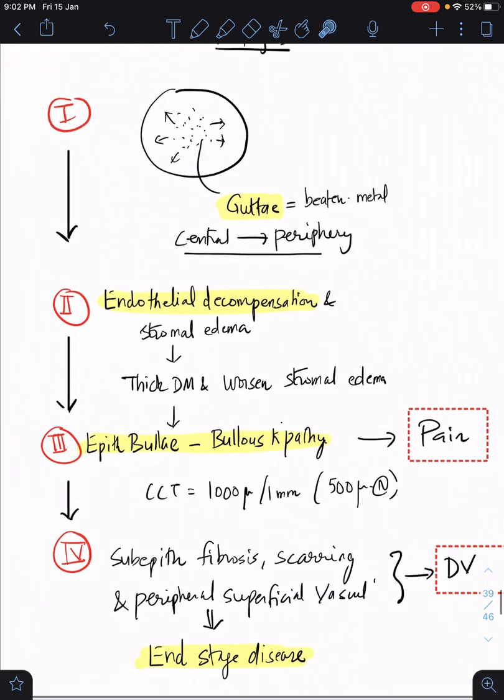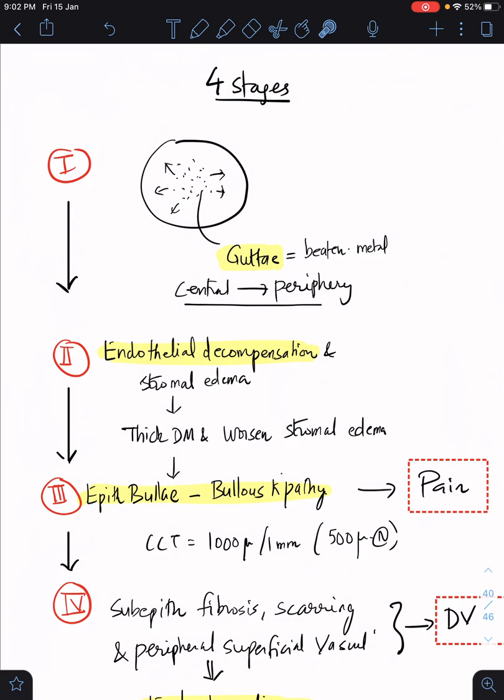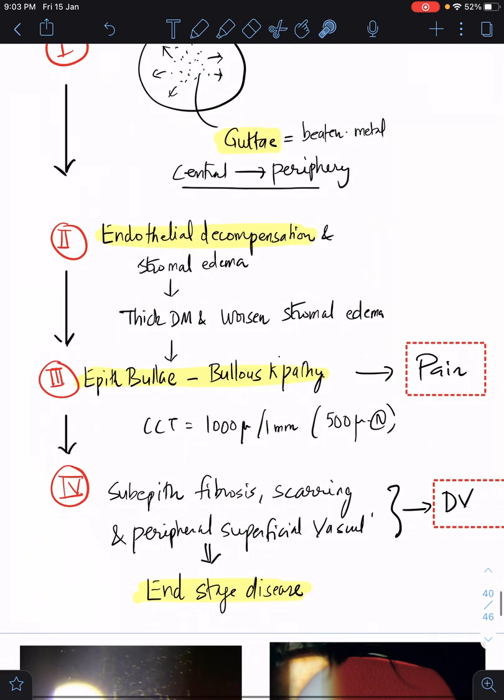There are four stages of Fuchs dystrophy. Stage one is going to be only guttae. The guttae will be in the central, slowly going to the periphery, giving this beaten metal appearance of the endothelium. Second is as the guttae spread, there is endothelial decompensation. Endothelium will fail to prevent the entry of water into the cornea.